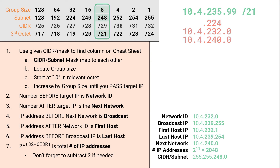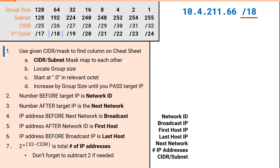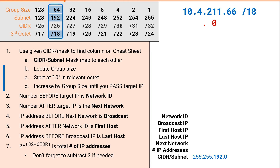Our final example problem will be 10.4.211.66 slash 18. As before, the CIDR notation will give us our column in the cheat sheet, and our column will give us the subnet mask. The group size for a slash 18 is 64, and we'll increment by 64 starting from .0 in the third octet. This gives us .64, .128, .192, .256.